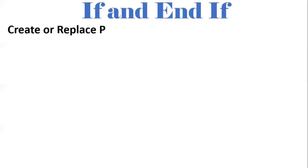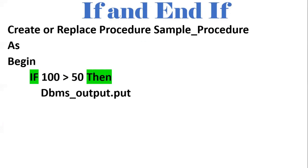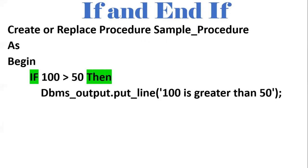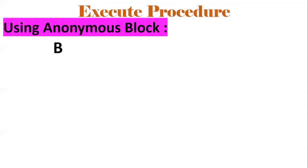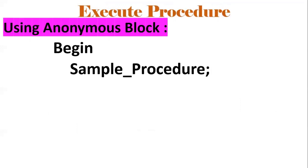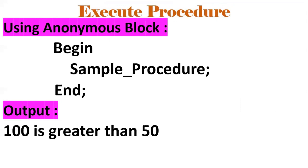Next is the IF/END IF conditional statement. In a simple example, we write: IF 100 > 50 THEN print '100 is greater than 50'; ELSE print '50 is greater than 100'; END IF. Since we know 100 is greater than 50, the output would be '100 is greater than 50'. Using an anonymous block, we can execute this and see the output is '100 is greater than 50'.